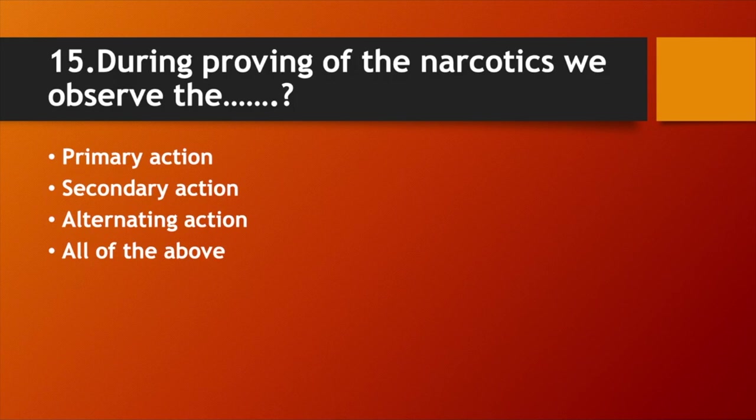During proving of the narcotics, we observe: Option A. Primary action. Option B. Secondary action. Option C. Alternating action. Option D. All of the above. Answer: Option B. Secondary action.